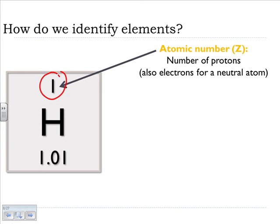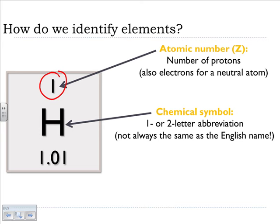If we're talking about neutral atoms, and we don't have to worry about that for another few chapters, we would be telling you the number of electrons also. The big letter or letters in the middle of the box is the chemical symbol. That's a one- or two-letter abbreviation, and again, that's not always the same as the English name. H equals hydrogen, but AG equals silver.